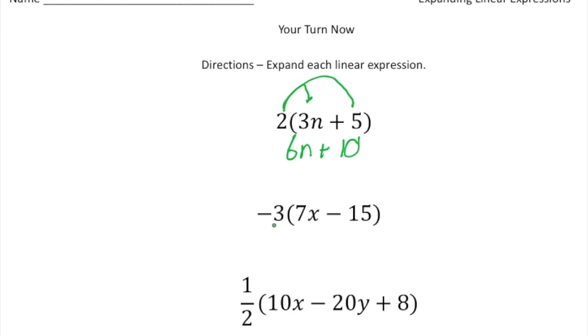The next one, we have negative 3 times 7x minus 15. Well, negative 3 times 7x is negative 21x. And then negative 3 times a negative 15, well, a negative times a negative is a positive, so that's going to be plus 45.